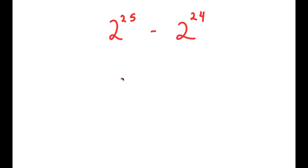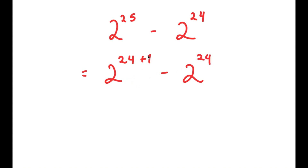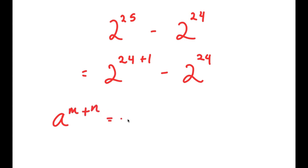To solve this, I'm going to first start by rewriting 2 to the power of 25 as 2 to the power of 24 plus 1, so I have this minus 2 to the power of 24. The reason I did this is because we want both of these to be the same — we want to have 2 to the power of 24s. So the best way of changing 2 to the power of 25 is to rewrite it as 2 to the power of 24 plus 1, so now I can use the property: a to the power of m plus n is equal to a to the power of m times a to the power of n.